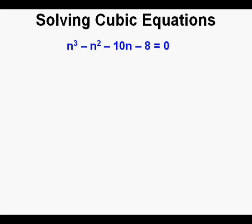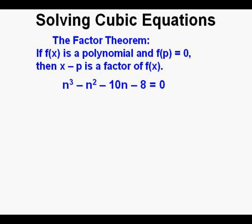We could launch into trial and error, but we'll use one thing to find a factor to get off to a good start. We can use something called the factor theorem. And that is, if f(x) is a polynomial and f(p) is zero, then x - p is a factor of f(x). We apply the factor theorem by changing the equation into a function that becomes f(n) = n³ - n² - 10n - 8.